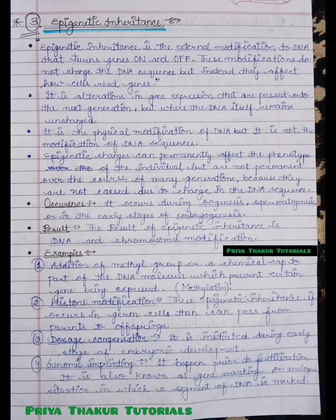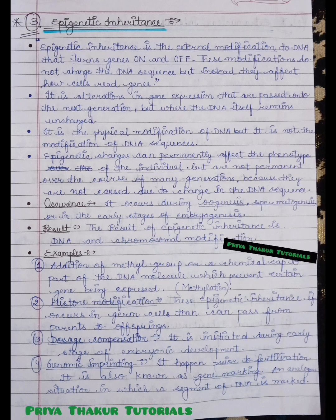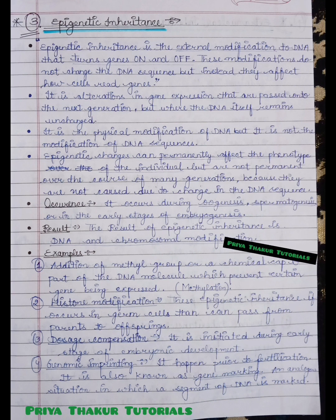The second example is histone modification. If epigenetic changes occur in germ cells, they can be passed from parents to offspring. The third example is dosage compensation, which is initiated during the early stage of embryonic development.